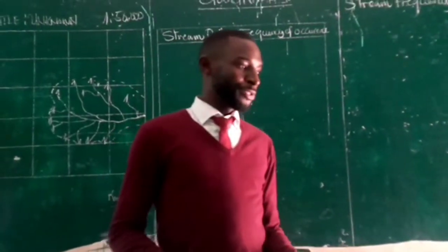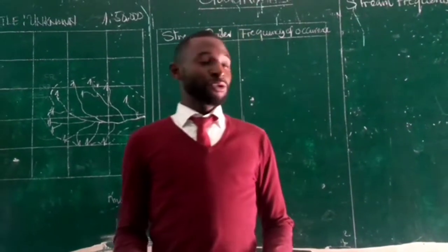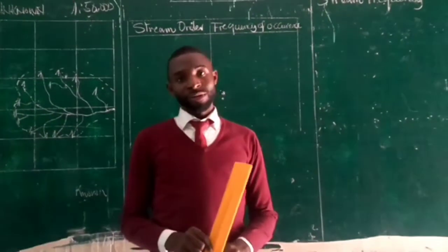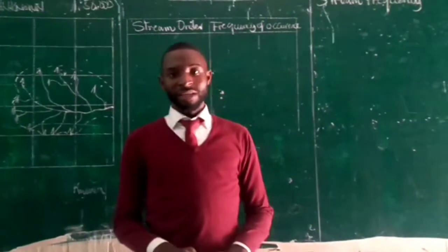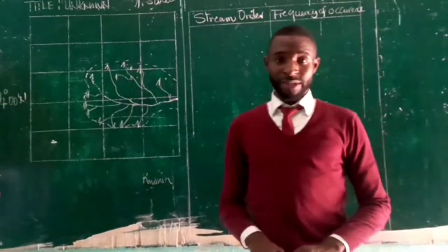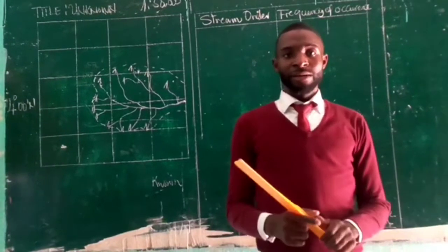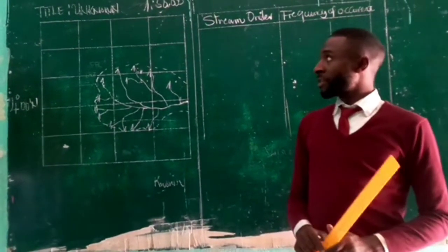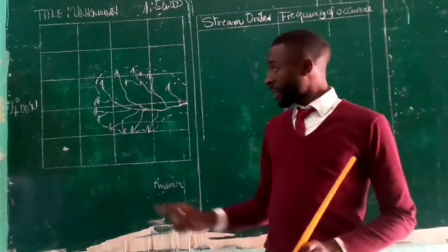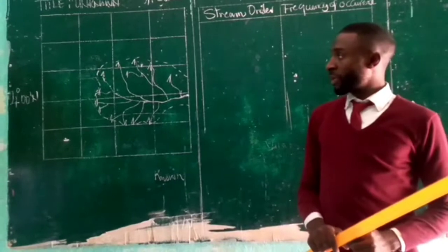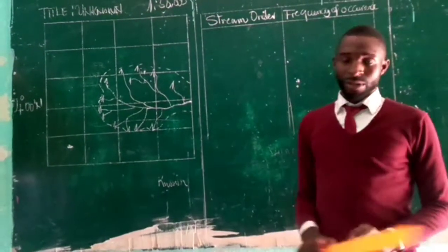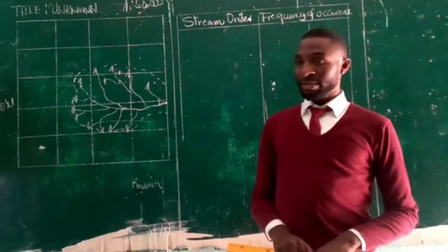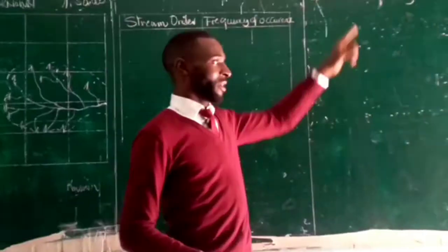Last time we already talked about the bifurcation ratio of a stream; now we want to see the stream frequency. Stream frequency refers to the number of times one comes across stream segments within a given drainage basin. Recall that the drainage basin is simply an area drained by a main river and its tributaries. On the map here — the country is unknown and the scale is 1:50,000 — we have a hypothetical drainage basin, and we are going to use this map to calculate the stream frequency.